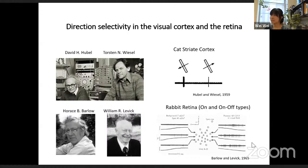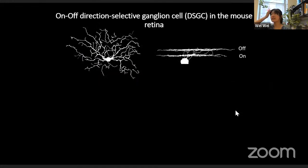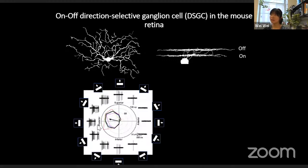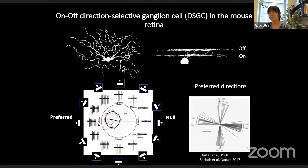In this talk I will focus on the on-off type of direction-selective ganglion cells (DSGCs). This slide shows an on-off DSGC in a mouse retina — the top view of the dendrites and the side view. These cells have two layers of dendrites, one in the on sub-lamina and the other in the off sub-lamina of the inner plexiform layer (IPL). The tuning curve plots the number of spikes as a function of motion direction; the arrow in the middle is the vector sum pointing to the preferred direction. There are four subtypes of on-off DS ganglion cells, with preferred directions aligned to cardinal axes — vertical and horizontal.